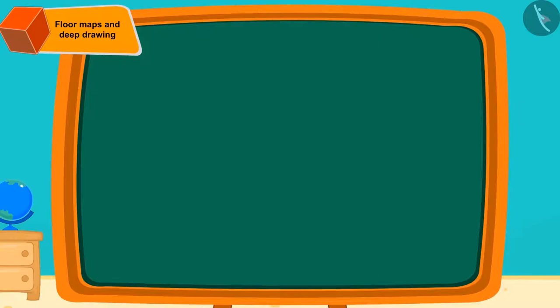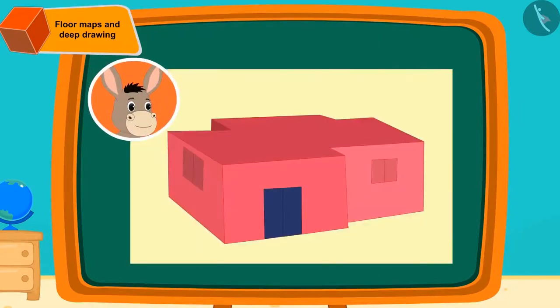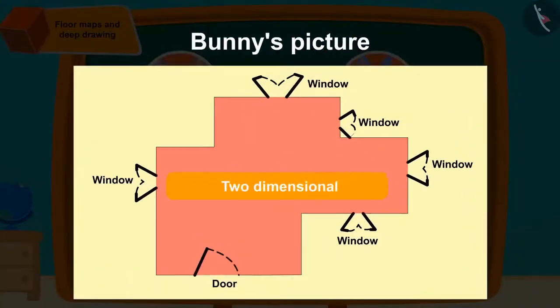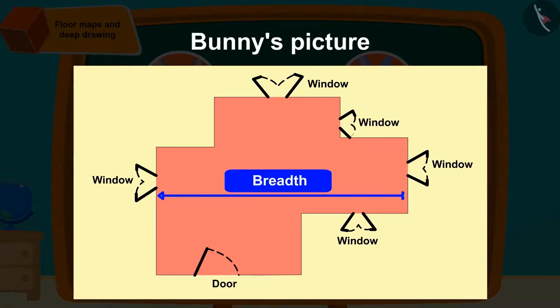Children, have you seen any picture similar to this one created by Bholla? Can you tell the difference between two pictures that Bholla and Bunny made? Correct! The floor map that Bunny had made is a two dimensional figure which has only length and the breadth of the room. That's why we cannot tell about the height of the room or the window.